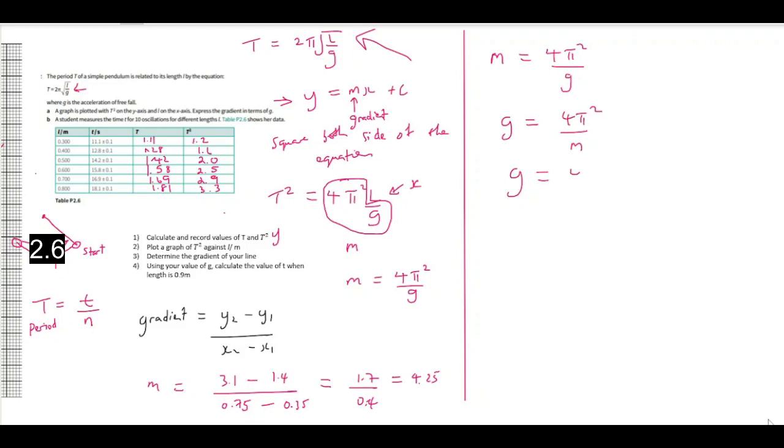So, G is equal to 4 pi squared divided by 4.25. Now, we want to see if our experiment was a good experiment, right? Because we know the value of G to some extent, which is the acceleration due to gravity.